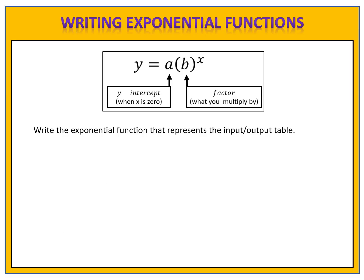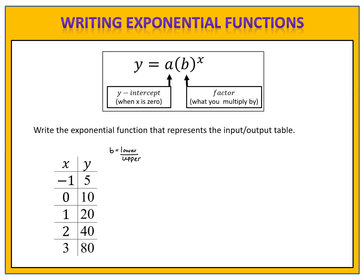Here's an example for you to try. Can you write a function that represents this input and output table? Remember, you need two things: find the y-intercept, which is the y-value when x is 0, and determine the factor, which is what we multiply by repeatedly. Please pause the video, write the function, and come back when you're ready to compare answers.